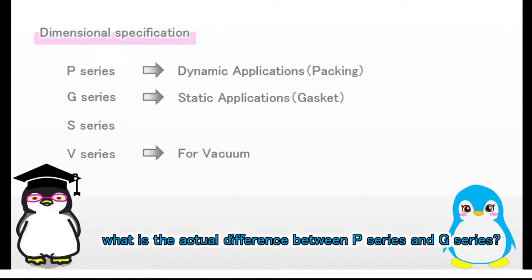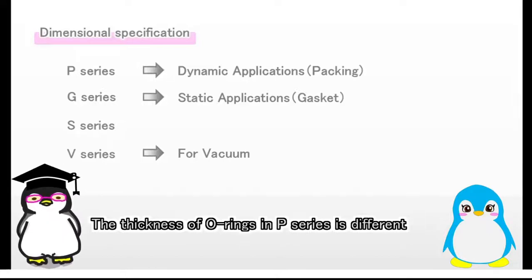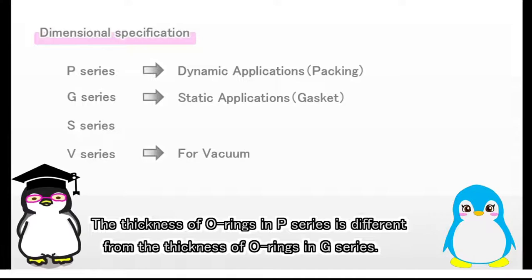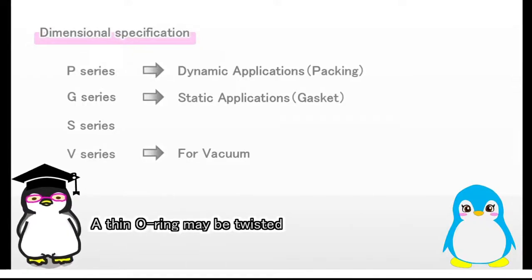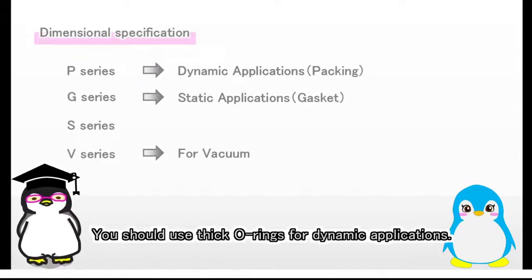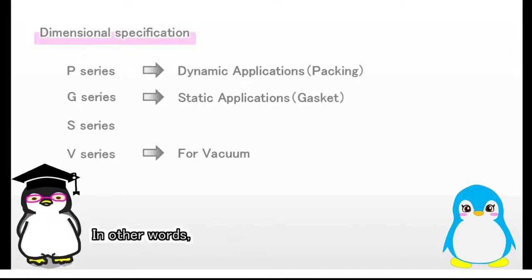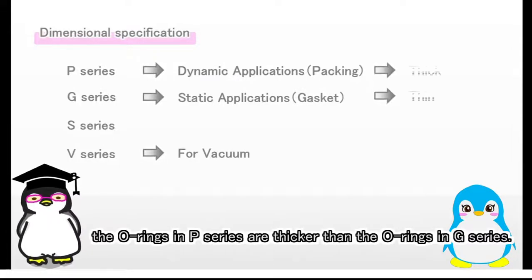But again, what is the actual difference between P-series and G-series? The thickness of O-rings in P-series is different from the thickness of O-rings in G-series. A thin O-ring may be twisted if it is used for dynamic applications. You should use thick O-rings for dynamic applications. In other words, the O-rings in P-series are thicker than the O-rings in G-series.